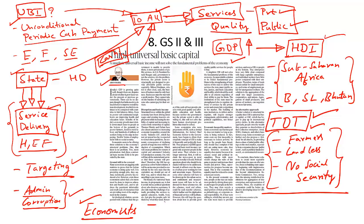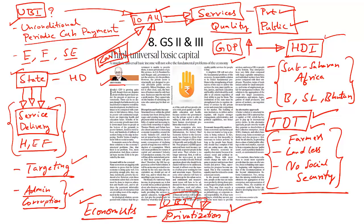Modern economists view universal basic income as one part of the solution, with more privatization as the second part. Essentially, the idea is to transfer state revenue directly to the people and ask them to access services from a largely privatized industry — with all basic services delivered by the private sector, allowing people to access good quality services more efficiently. This model is being propagated by economists in India and across the world.